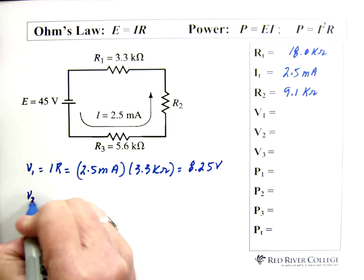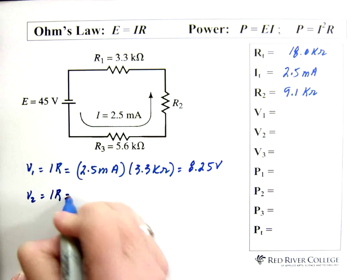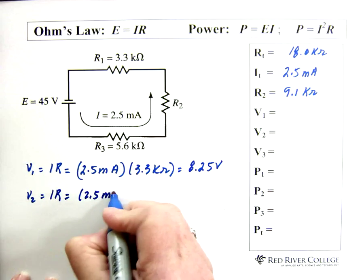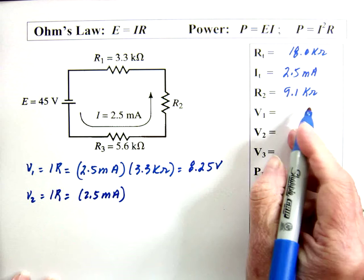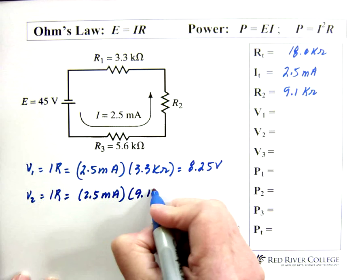Voltage 2, again, IR, which is simple, right? 2.5 milliamps, R2 we've solved for 9.1 kilohms, equals.